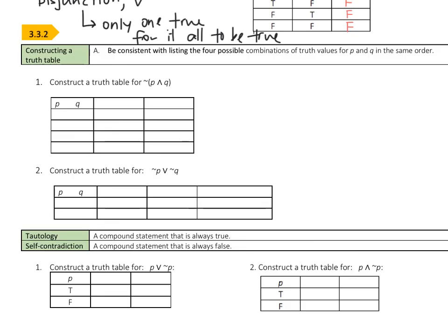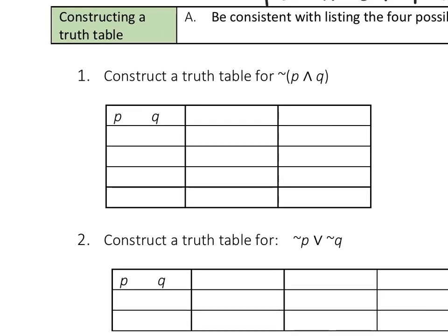Now we're going to get into actually constructing a truth table. We're always going to set it up the same way — we want to be consistent with listing the four possible combinations of truth values for P and Q in the same order every time. We always start the first two columns with P and Q. I'm actually going to draw a line down there. P is either true or it's false, so I go through: P is true, true, false, false. I always start my P column that way.